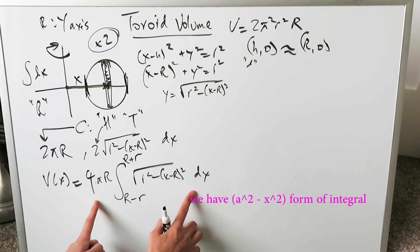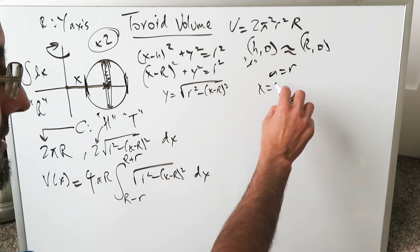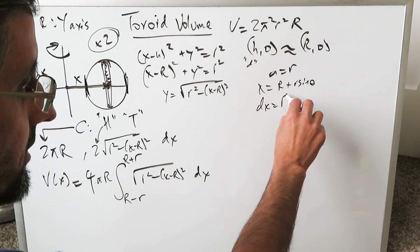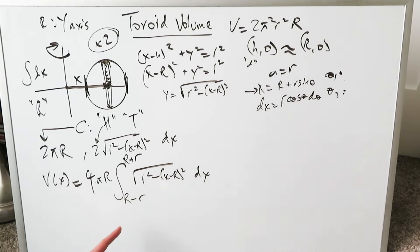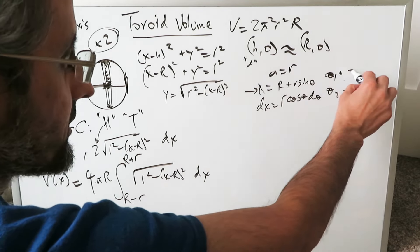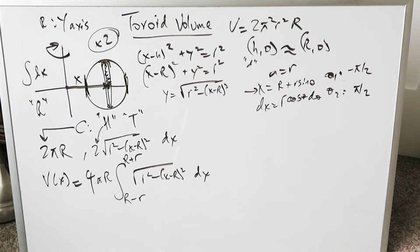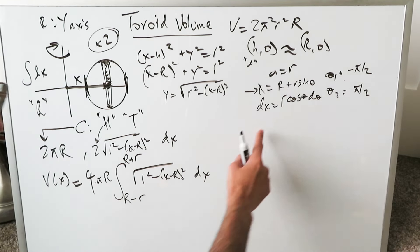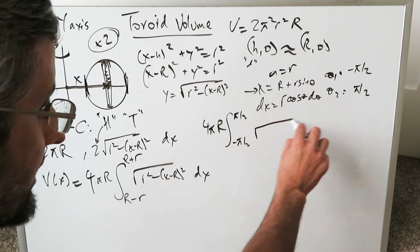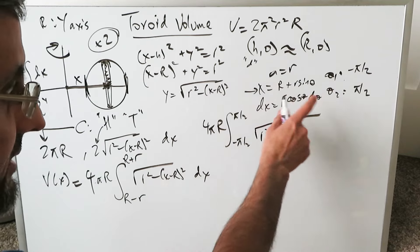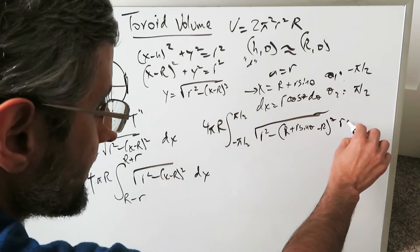To evaluate this integral we use trigonometric substitution. Let x − R = r·sinθ, so dx = r·cosθ dθ. Applying the limits: when x = R − r, sinθ = −1 so θ = −π/2; when x = R + r, sinθ = 1 so θ = π/2. Substituting in: r² − (x − R)² becomes r² − r²sin²θ. Inside the integral, the R terms cancel and we get r²cos²θ under the radical, which equals r·cosθ.